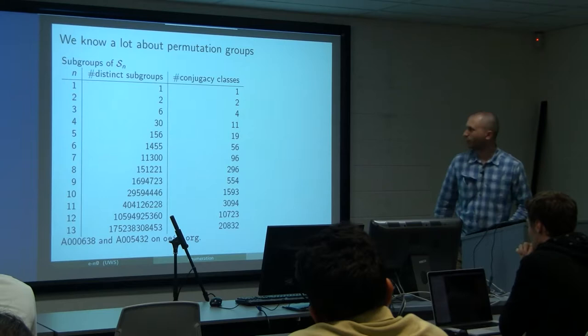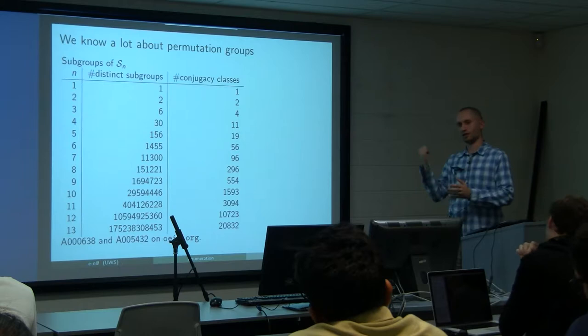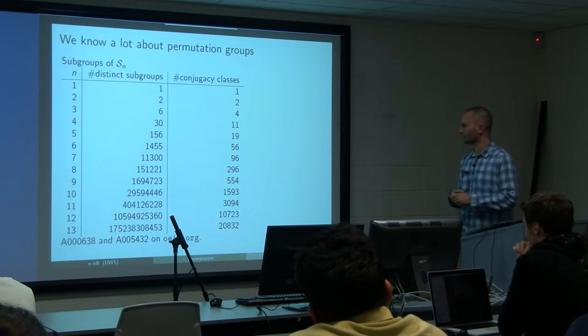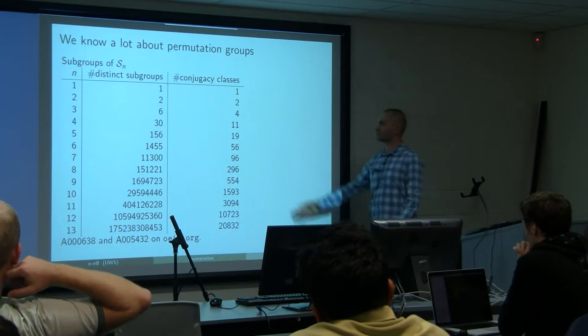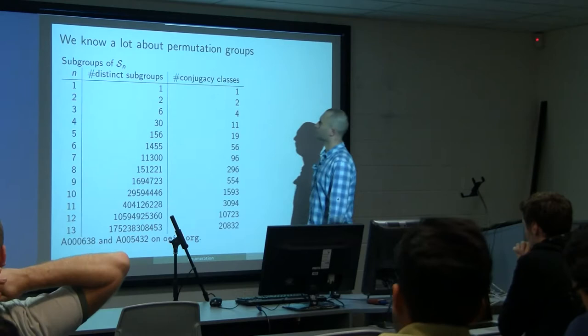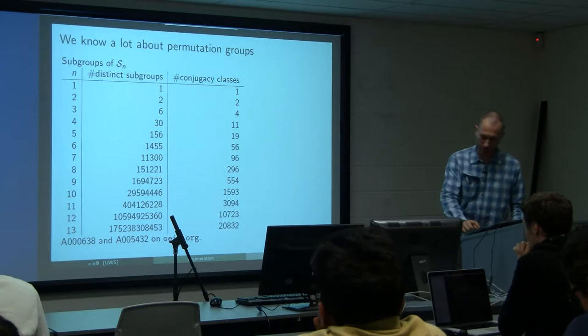The problem is that for a set with n points, the size of the full transformation semigroup is n to the power n, which grows very quickly. The obvious approach is to check all subsets and see whether they are closed. Today's computer can handle the smaller cases, but given that Moore's law is sort of broken, waiting for generations of computers is not a good strategy. We have to do something else.